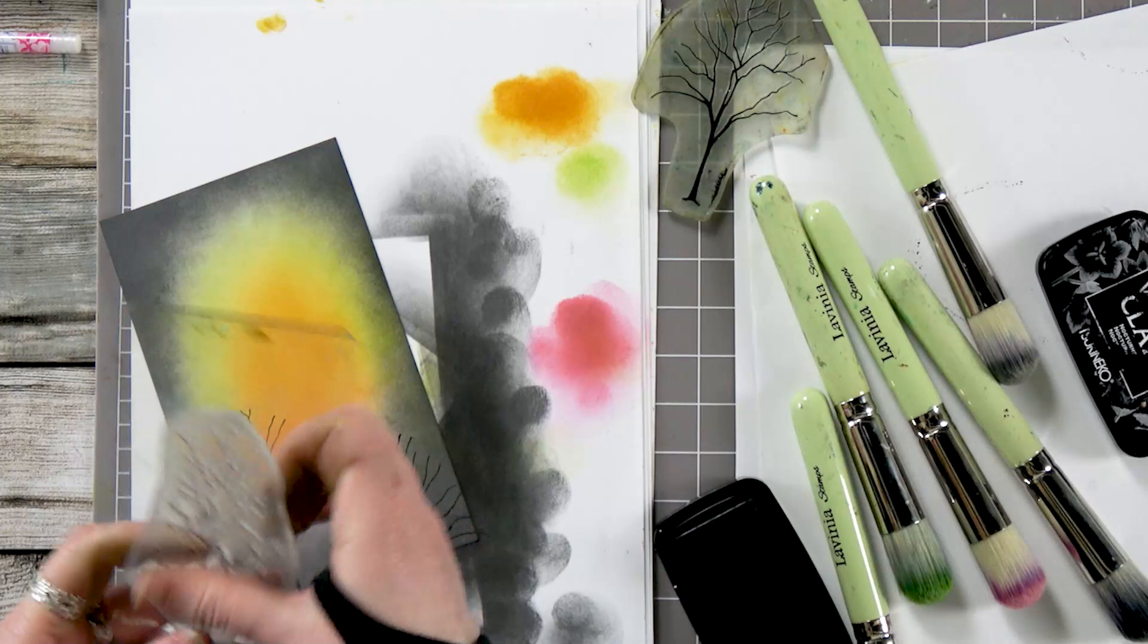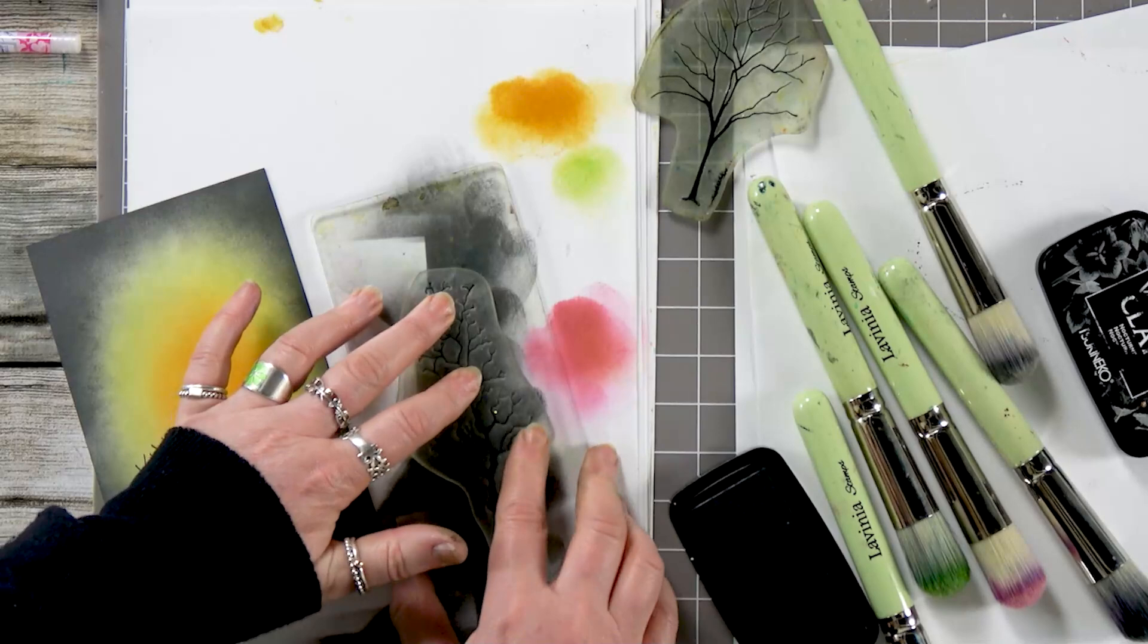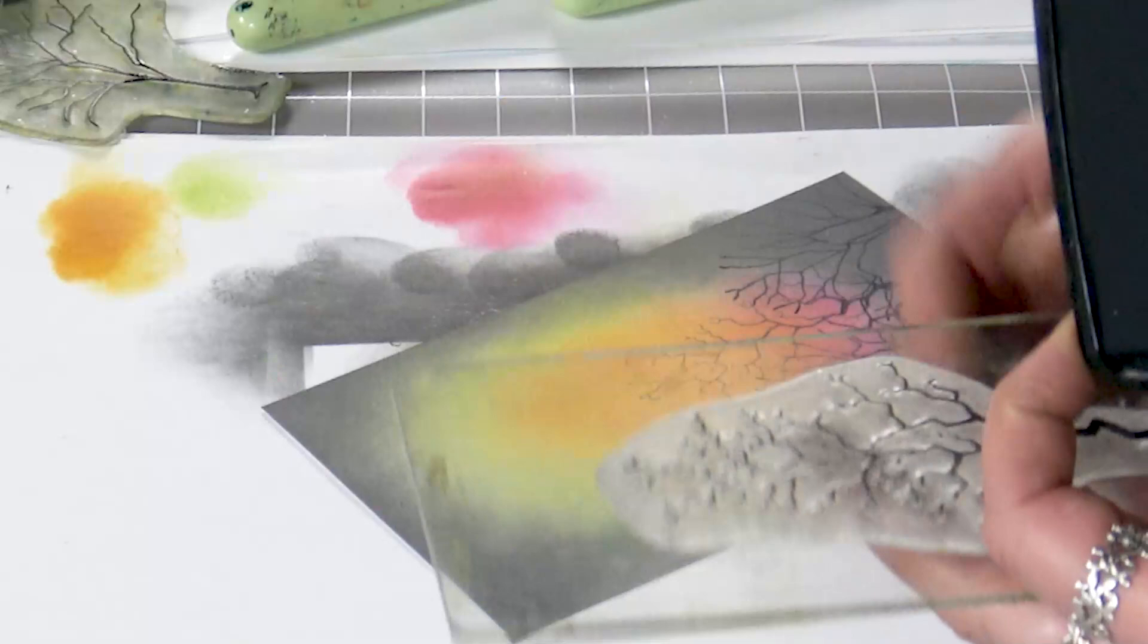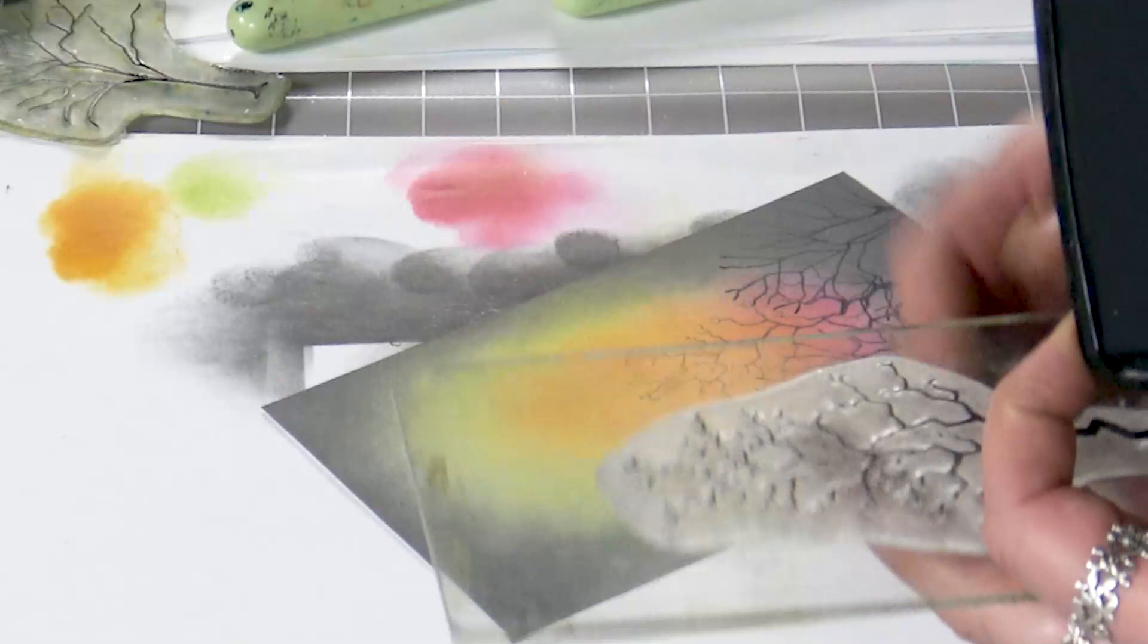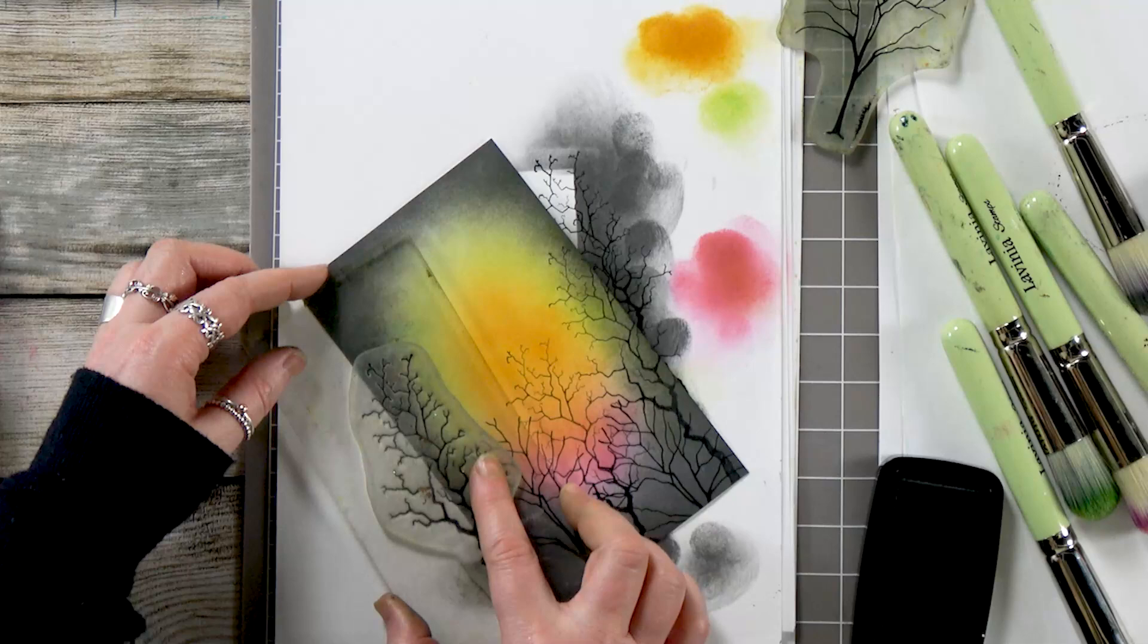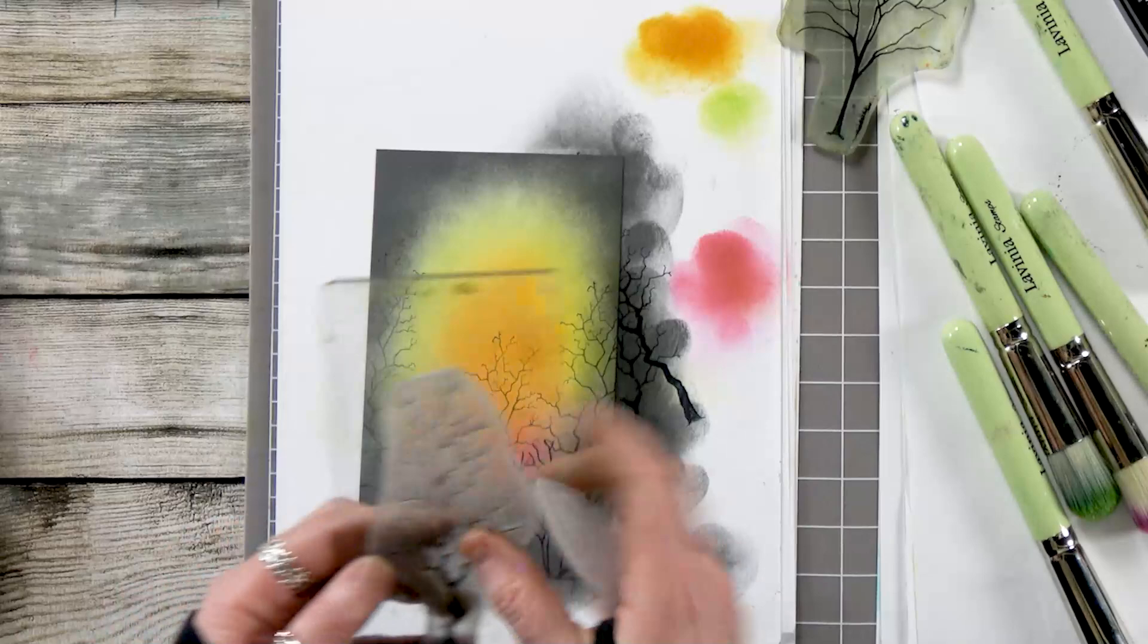And then I'm going to bring in a different tree again, ink up. This time I'm going to take that first impression off and then stamp. And I'm going to do the same again, ink up, stamp off and just bring that up the edge there and maybe a little bit over that side as well.